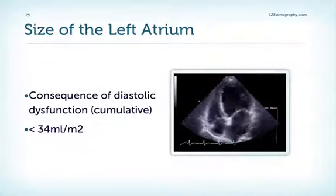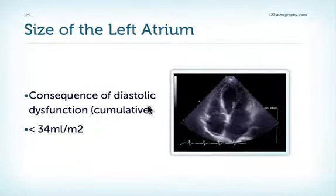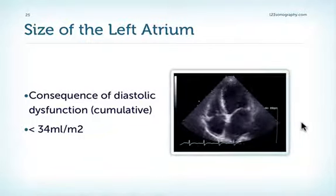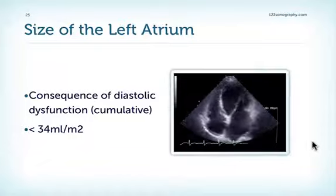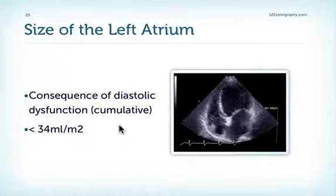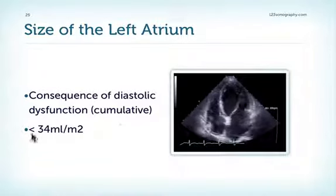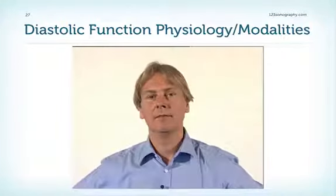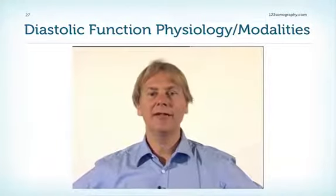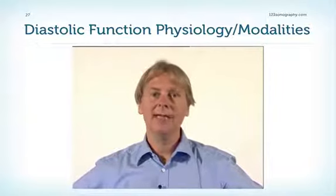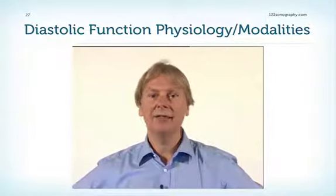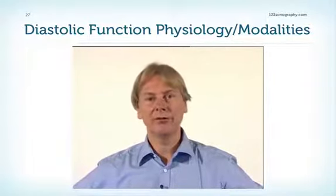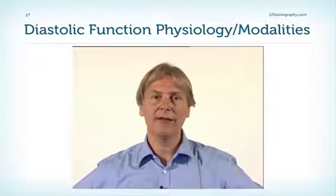Don't forget that the 2D image alone provides valuable information with respect to diastolic function — specifically, the size of the left atrium reflects elevated left atrial filling pressures and thereby diastolic dysfunction. Normally the left atrium should be below 34 milliliters per square meter. The physiology behind diastolic dysfunction is not that complicated, and even though we have four different modalities, we usually only use the mitral valve inflow and possibly the tissue Doppler of the mitral valve annulus.